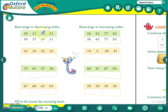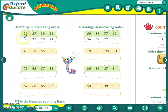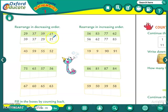What is decreasing order? Decreasing order means biggest to smallest. Now see these numbers — 29, 37, 39 and 21. Decreasing order means the biggest number we will write first and the smallest number we will write at the last. So which is the biggest number? 39. Out of these four, 39 is the biggest. Then 37, then 29, and the smallest number is 21.